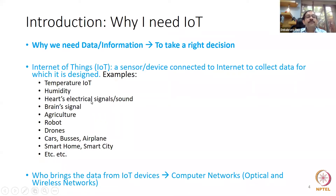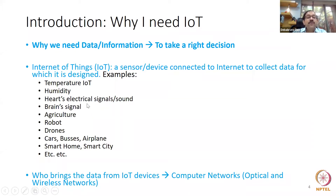But suddenly, if an elderly person falls down due to a heart problem, the same IoT devices become an emergency device. Within one to three milliseconds you must detect that the person has fallen and their heartbeat is not good. Communication must happen quickly with no failure. One case: temperature reading — a delay of one second to reach the data center is no problem. But for a heart emergency, it must reach the doctor in 10 milliseconds.